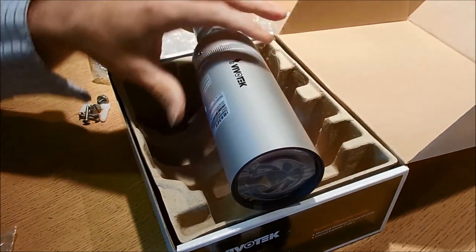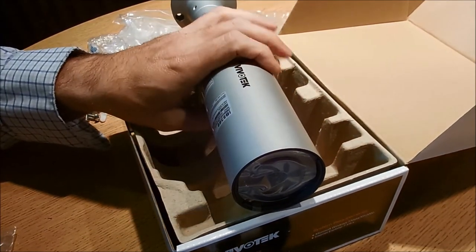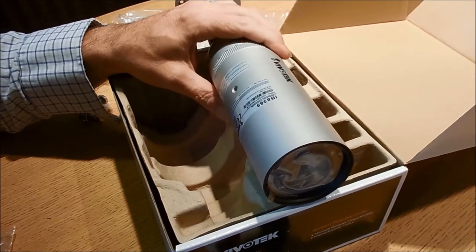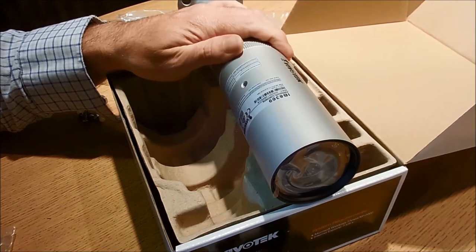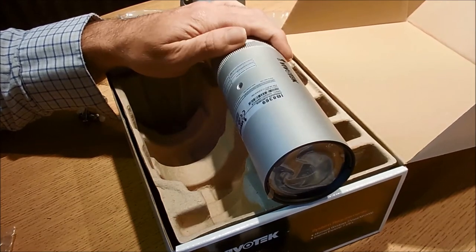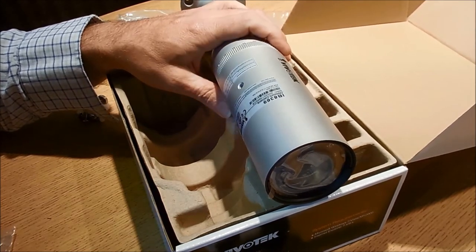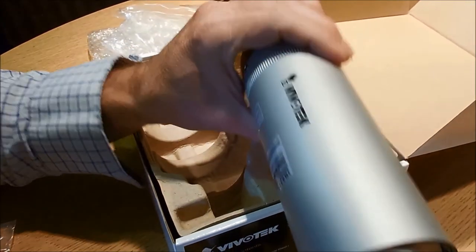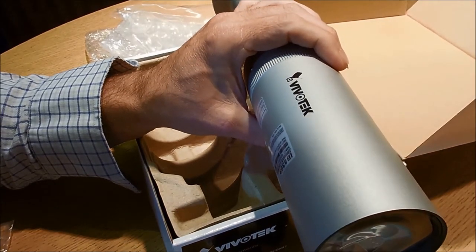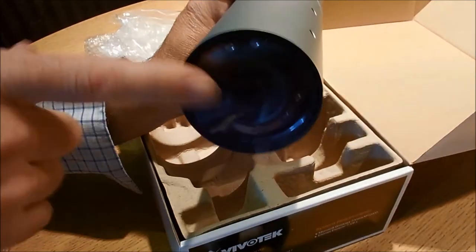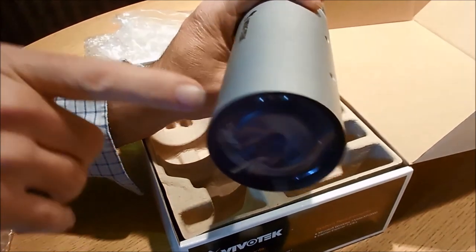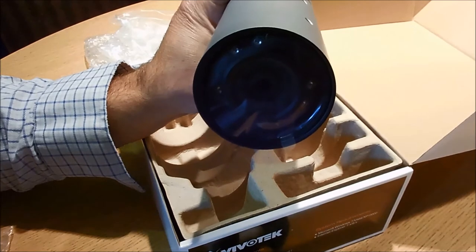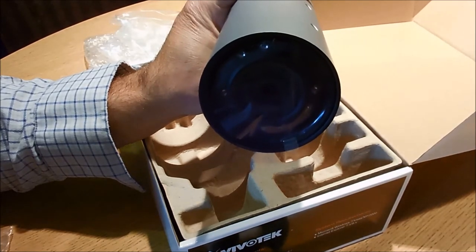The camera is two megapixel, so it will give you 1080p HD at 30 frames a second. It will also do Motion JPEG as well as H.264. It's dual streaming, so it's compatible. The camera itself has a proper removable IR cut filter for proper day night operation.